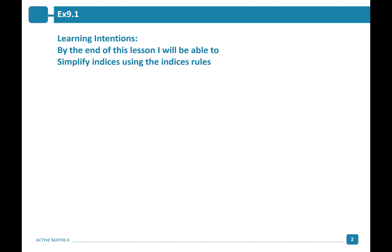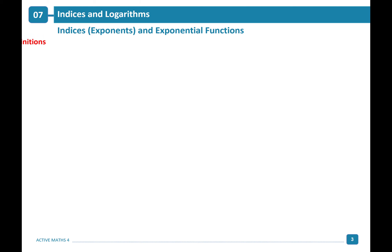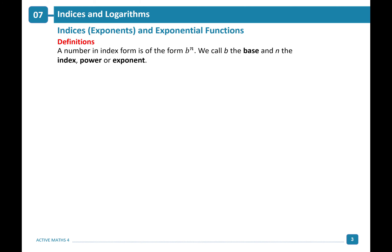We are looking at our indices rules today. A number written in index form is in the form b to the power of n, where b is your base and n is called the exponent, the power, or the index.